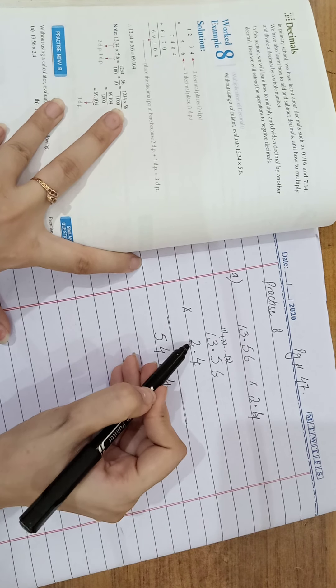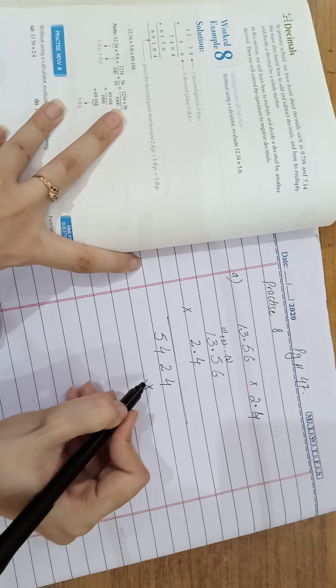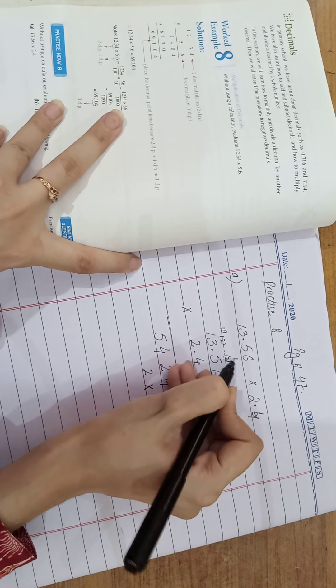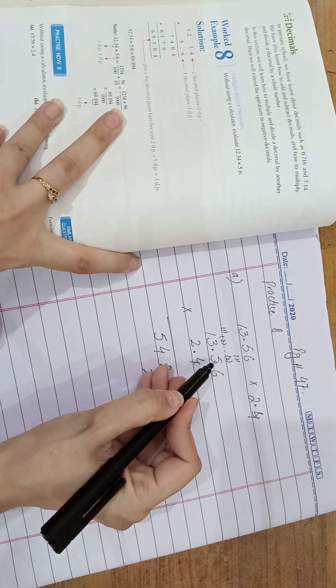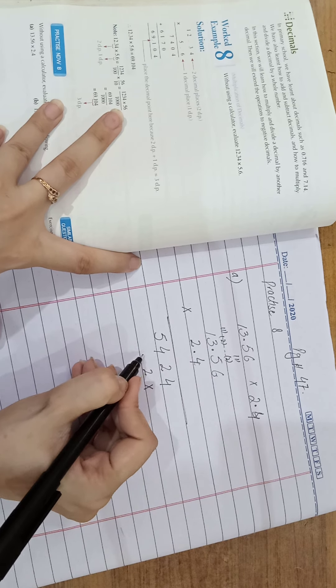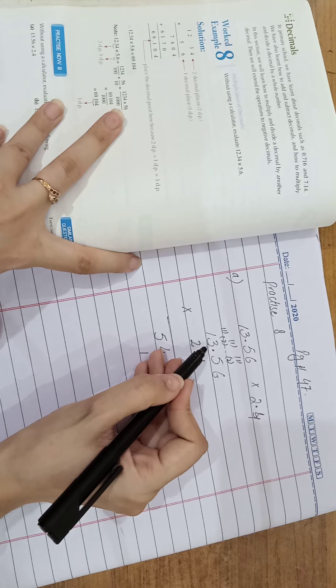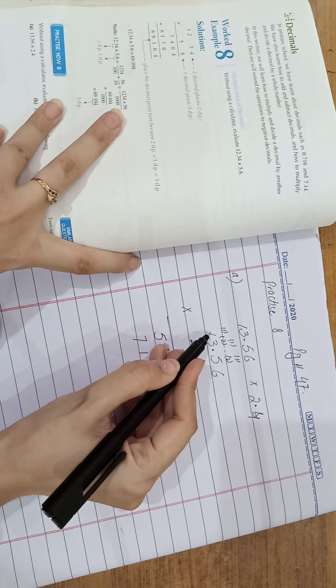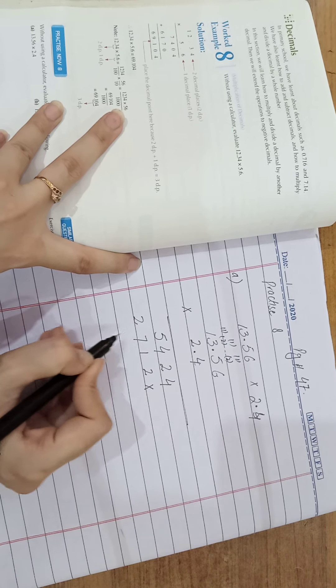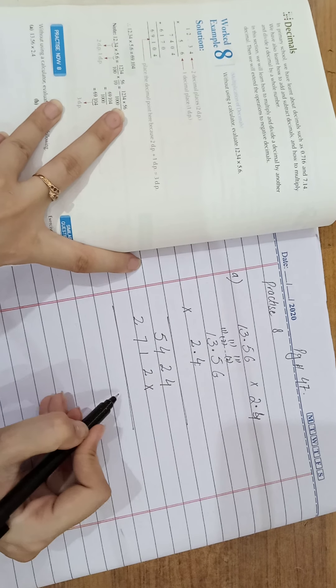Multiply. 2 times 6 is 12. 1 is carry. 2 times 5 are 10, plus 1 is 11. 1 is carry. 2 times 3 is 6 plus 1 is 7. 2 ones are 2.